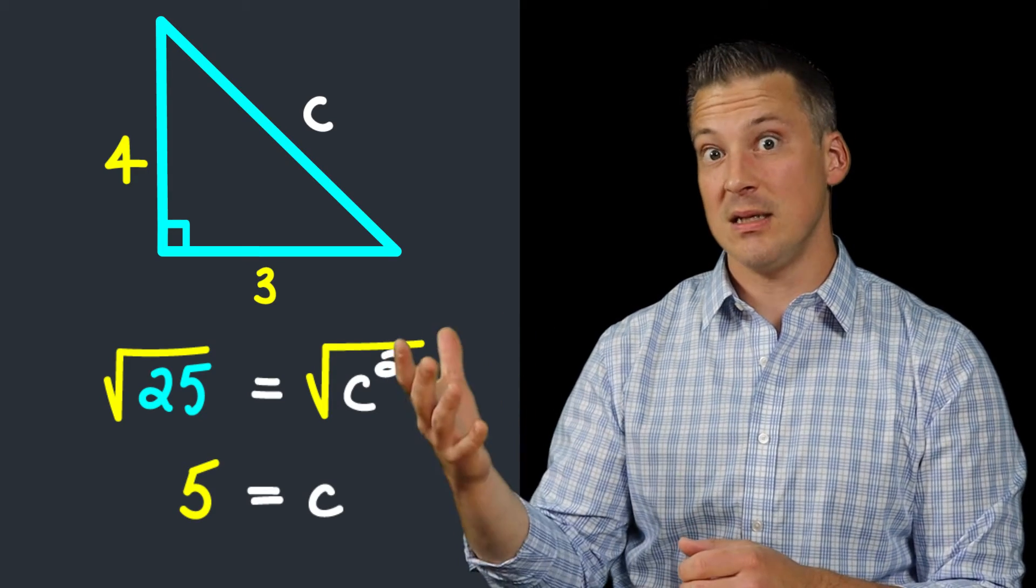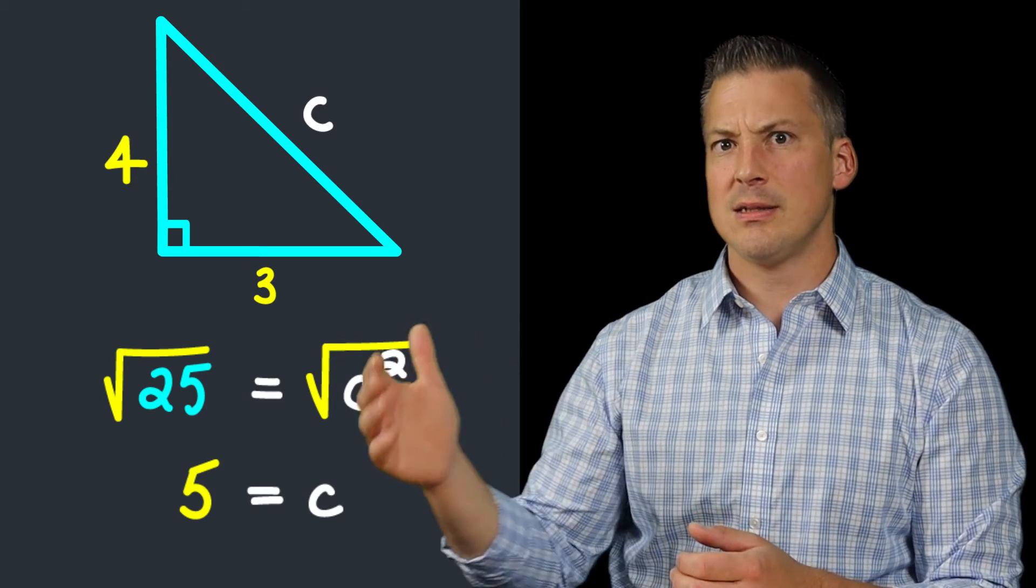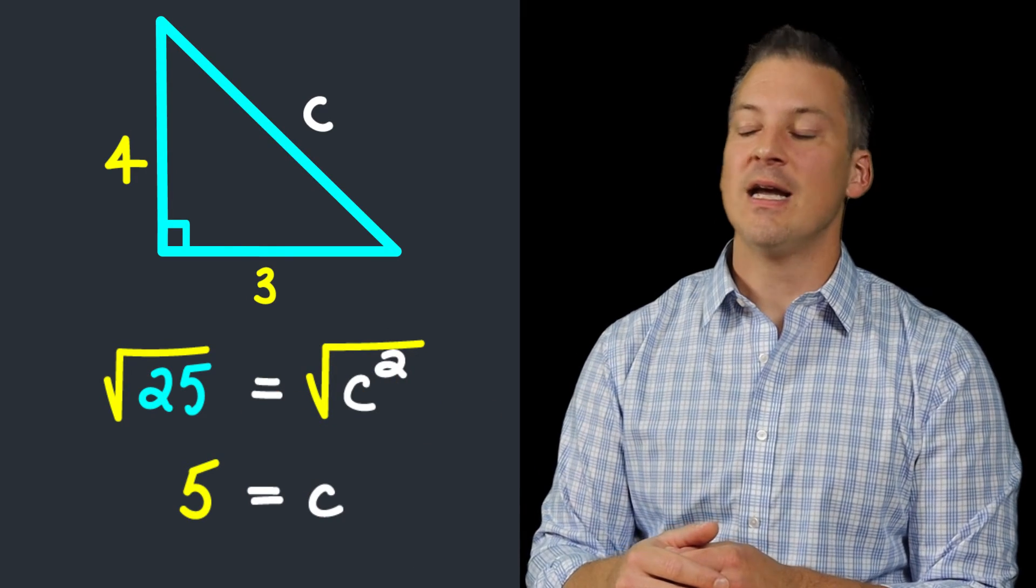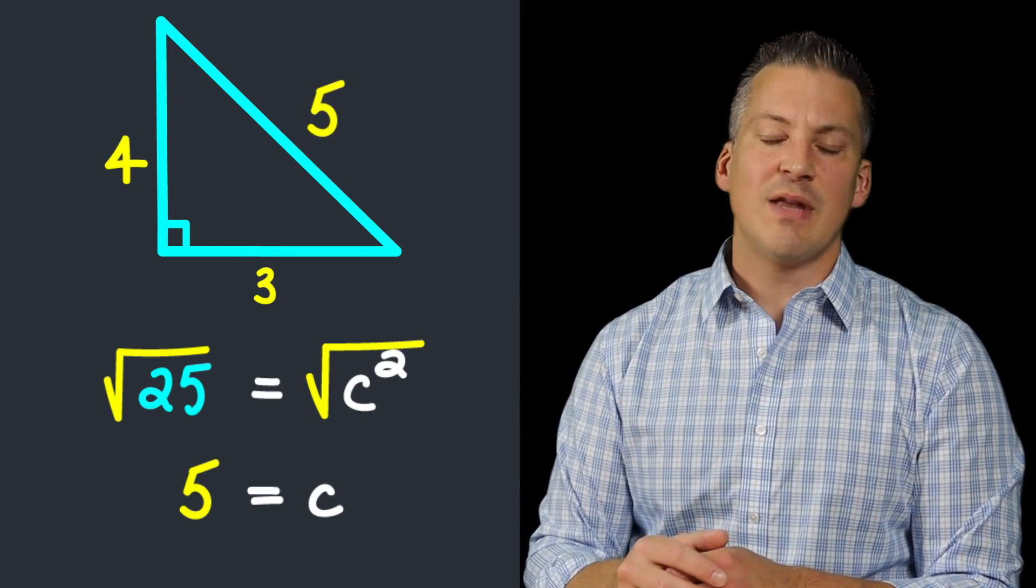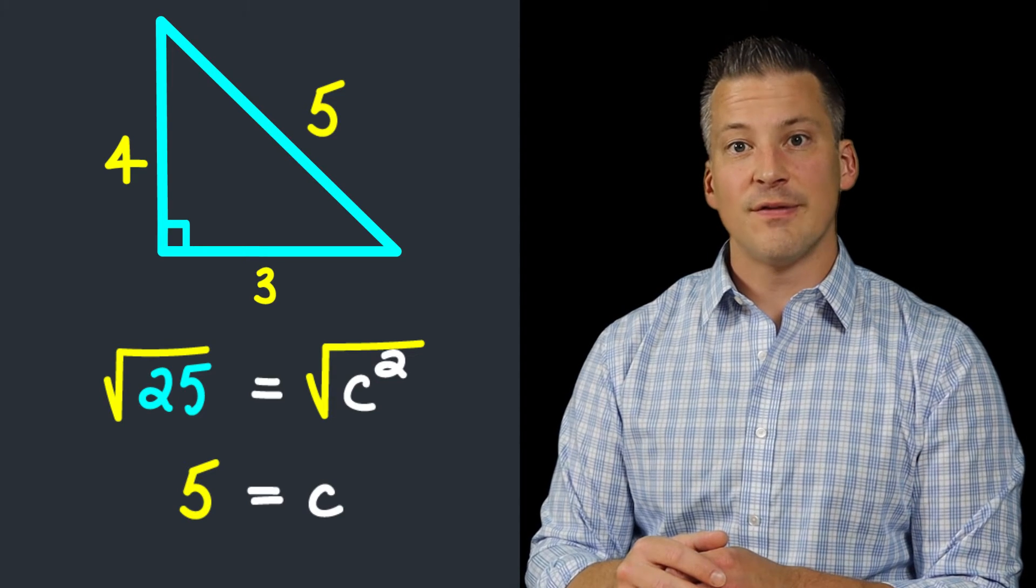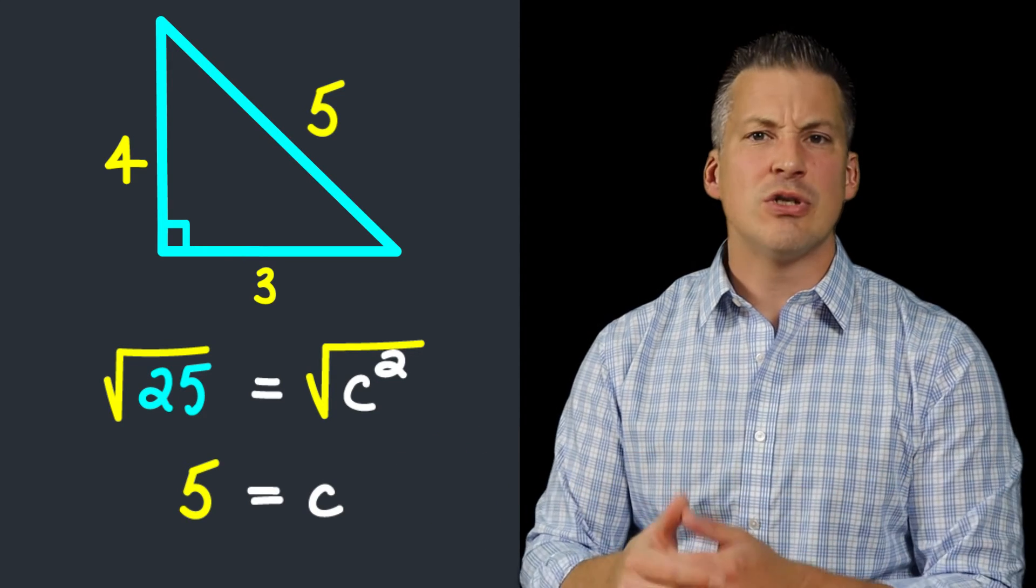So we realize that c, which is the hypotenuse, is equal to 5. So hopefully you follow that. So we now know that the length of that hypotenuse is 5, and that's all that there is to it.